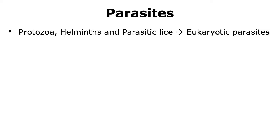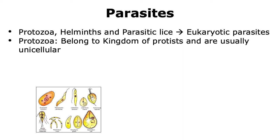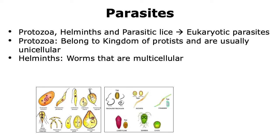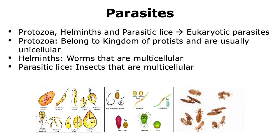Different eukaryotic organisms are able to cause infections and hence are referred to as eukaryotic parasites. These include protozoa, helminths, and parasitic lice. Protozoa are organisms that come under the kingdom of protists and they are usually unicellular. Helminths are worms that are multicellular, and parasitic lice usually are insects.